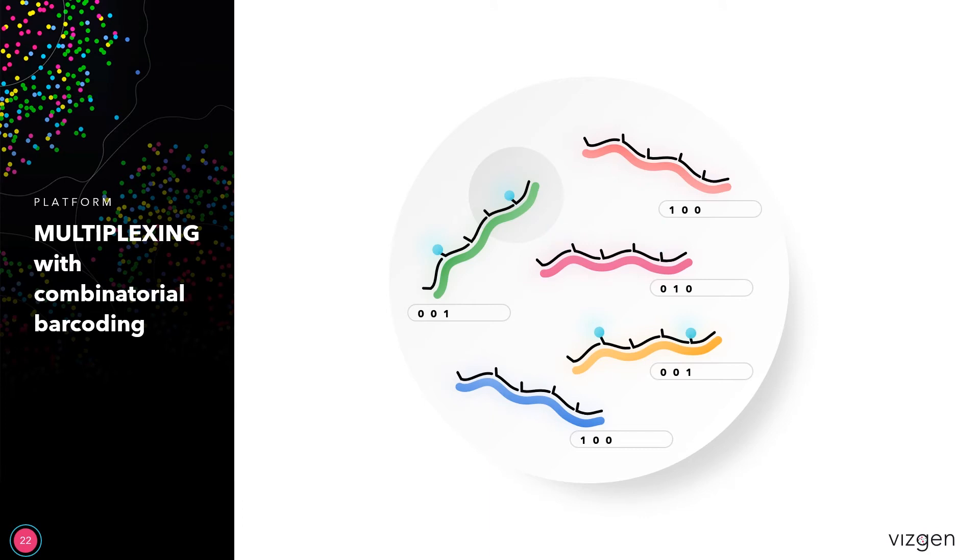By performing multiple rounds of imaging, a binary barcode can now be read out. We can match this readout with the original barcode that identifies what the gene transcript should be.